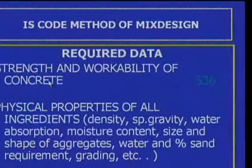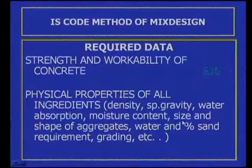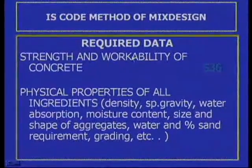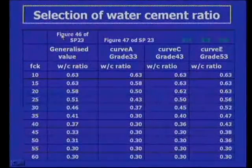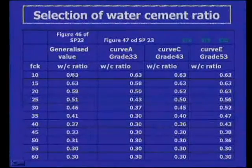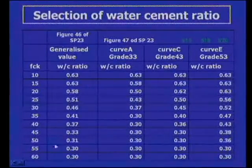For mix design, certain data is required. First: strength and workability of concrete — we must fix what strength and workability we want. These parameters depend on many other things. Second: physical properties of all ingredients — density, specific gravity, water absorption, moisture content, size and shape of aggregates, water and percentage sand requirements, grading, etc. For strength and workability requirements, the water-cement ratio is tabulated from experimental results. The FCK versus water-cement ratio graph from Figure 46 of SP23 gives values from M10 (w/c = 0.63) up to M60 (w/c = 0.3).